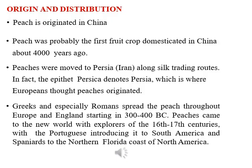Let's talk about the origin and distribution of Peach. Peach originated in China. It is assumed that about 4000 years ago, peach was the first fruit crop domesticated in China. Peach was moved to Persia, nowadays called Iran, along silk trading routes. In fact, the epithet Persica denotes Persia, which is where Europeans thought peach originated. Greeks and especially Romans spread the peach throughout Europe and England starting in 300 to 400 BC.